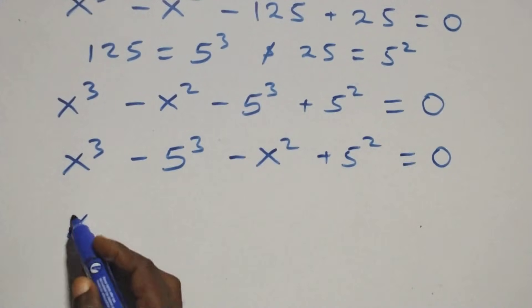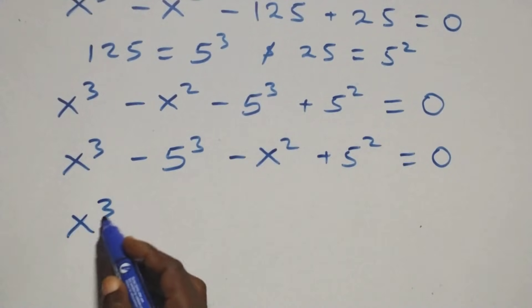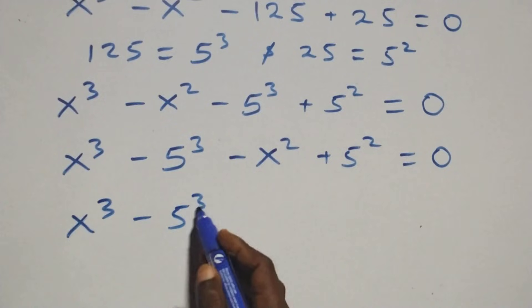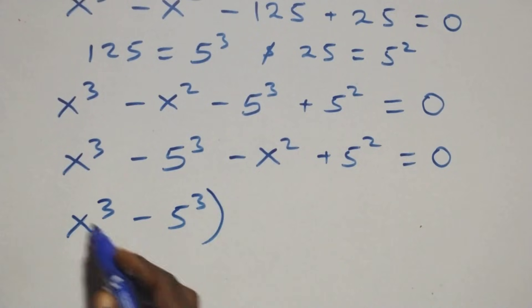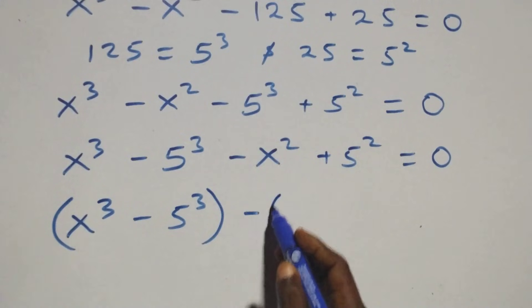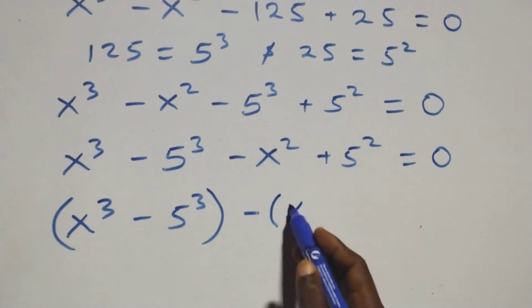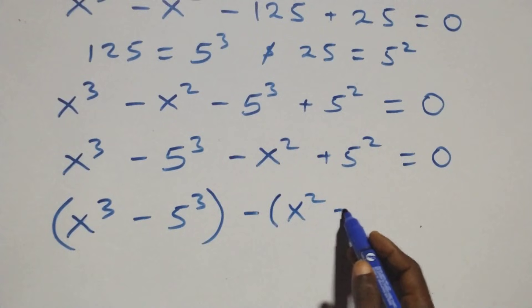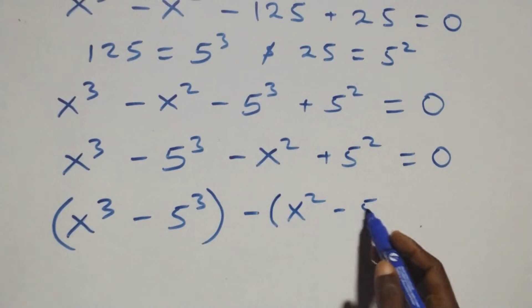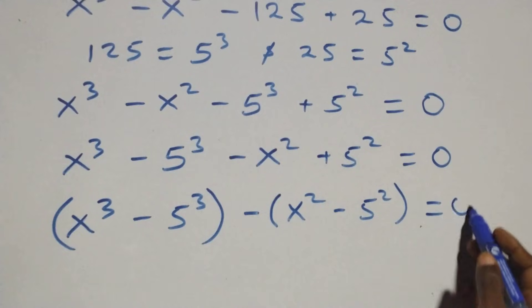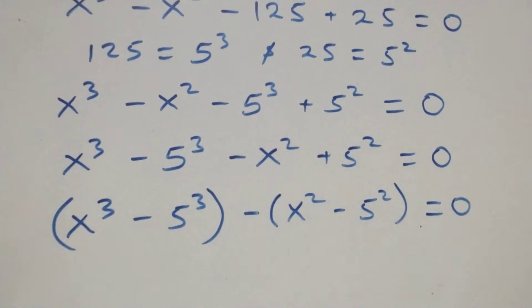This is the same thing as (x raised to power 3 minus 5 raised to power 3) in brackets, then minus is common, factored over: minus (x raised to power 2 minus 5 raised to power 2) in brackets, equals to 0.